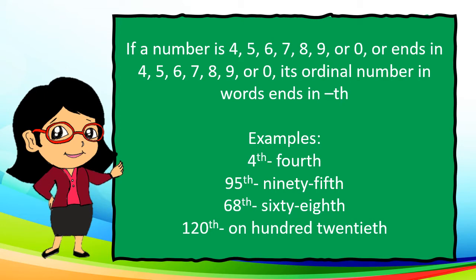If a number is 4, 5, 6, 7, 8, 9, or 0, or it ends in 4, 5, 6, 7, 8, or 9, its ordinal number in words ends in TH. For example: fourth, 95th, 68th, 120th.